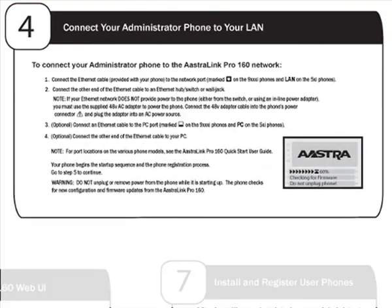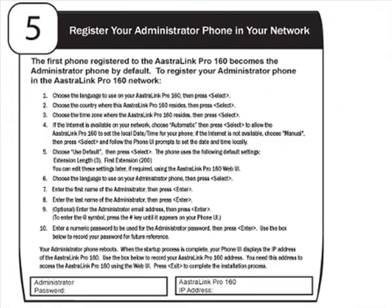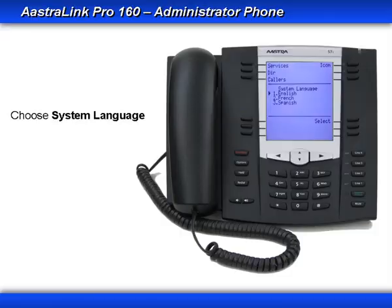Step 4: Connect your administrator phone to the LAN. The administrator phone is the first phone connected to the LAN after the base unit boots up. Astra's auto-discover and self-provisioning process is used by Astralink Pro to discover and provision phones. Once the phone finds the Astralink Pro, it will check its firmware. If it doesn't match, the phone will automatically load the new firmware. Step 5: Now that the phone is connected to the base unit and has loaded the latest firmware, you'll be asked to answer a few simple questions to complete the setup of your administrator phone.